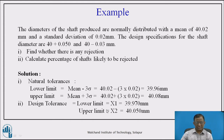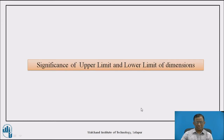Similarly, for design tolerance, the limits are directly specified. The lower limit is 40 - 0.03 = 39.97 mm, which is the minimum dimension the designer allows to maintain quality. The upper limit is 40 + 0.05 = 40.050 mm. So 40.050 mm is the upper limit of design tolerance. With these two tolerances established, we can proceed with the analysis.